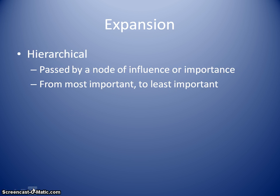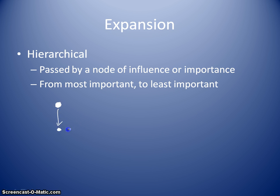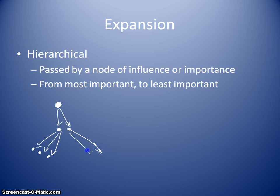Hierarchical diffusion is passed on by a node of influence or importance. I always love to talk about Oprah Winfrey here because she essentially is the queen of hierarchical diffusion — pretty much anything she touches turns to gold, things like her book club. Somebody with a tremendous amount of influence — Oprah, the Pope, the President — starts with that person, and then it moves on down the line. So we have the idea diffusing from Oprah saying 'you will read my book' to her viewers, who then tell their friends, and it expands into the population along a network from the most important to the least important person.